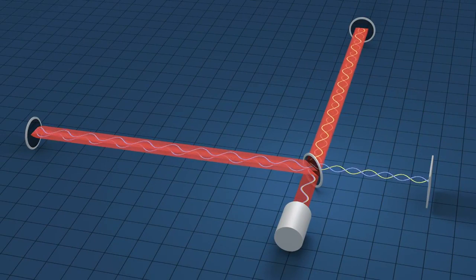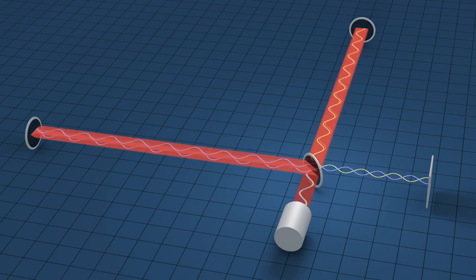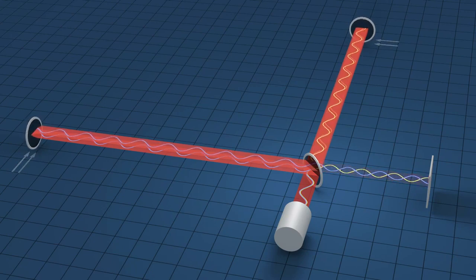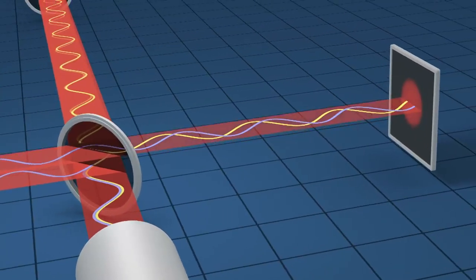As the gravitational waves pass, the distance between the central beam splitter and the end mirror stretches along one arm and compresses along the other. This changes the time it takes the light to travel along the arms. The recombined light waves shift with respect to one another and produce a signal at the detector.